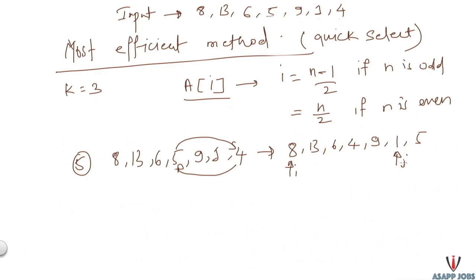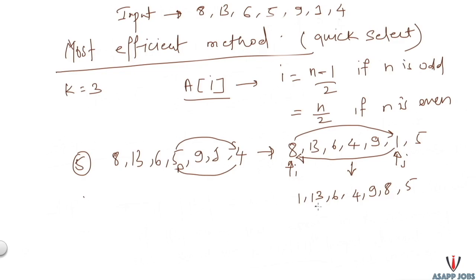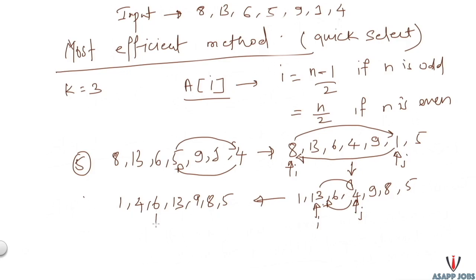Pointer i moves right until it points to an element greater than the pivot, and j decrements until it points to an element less than the pivot. Both satisfy their conditions, so we swap the elements at i and j. Then we increment i — it moves to 13 — and decrement j. Since 9 is not less than 5, we decrement j again. We swap, and the sequence updates. i increments to point to 13, j decrements and points to 6, but 6 is not less than 5, so we decrement once more.